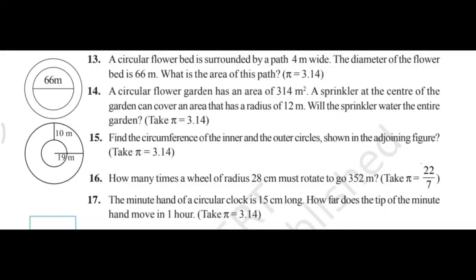This is question number 15. Find the circumference of the inner and outer circles shown in the adjoining figure. We will use the inner radius and outer radius to find the inner and outer circumferences using the formula 2 pi r.